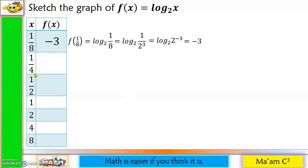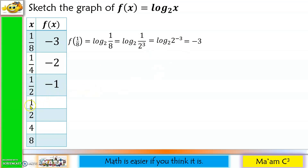Next, x = 1/4. Since 1/4 = 1/2 squared, the answer is negative 2. And 1/2 = 1/2 raised to the first power, so the answer is negative 1. For x = 1: f(1) = log base 2 of 1. By the property of logarithm, if x = 1, then this equals 0.